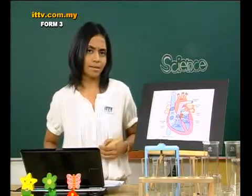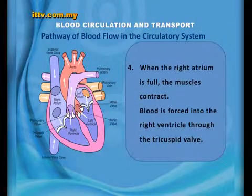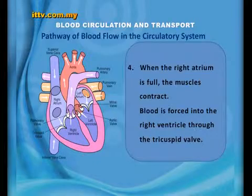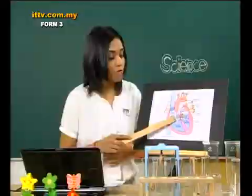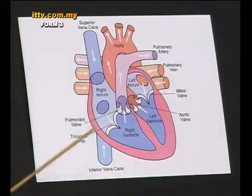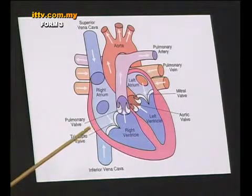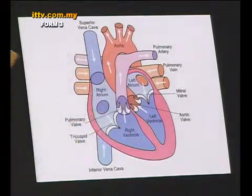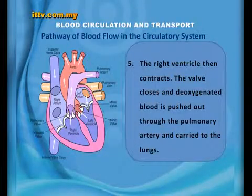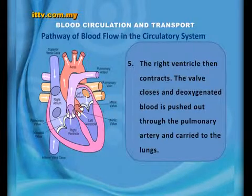After that, when the right atrium is full, the muscles contract. Blood is forced into the right ventricle through the tricuspid valve. So we have fully collected blood in the right atrium, and when the right atrium contracts, the blood flows to the right ventricle through the tricuspid valve. The right ventricle then contracts, the valve closes, and deoxygenated blood is pushed out through the pulmonary artery and carried to the lungs.